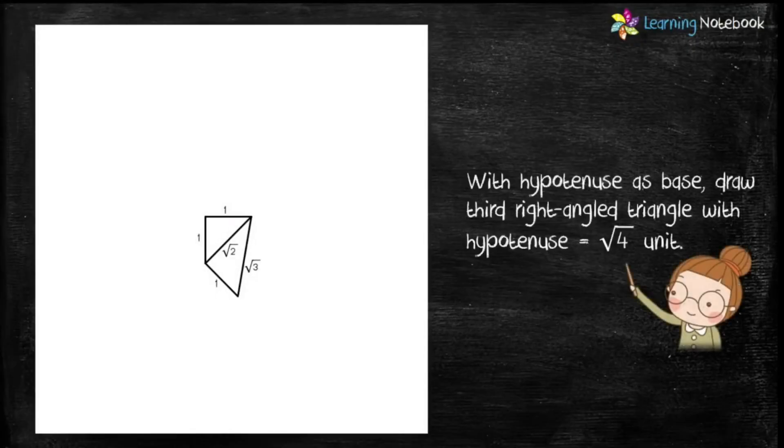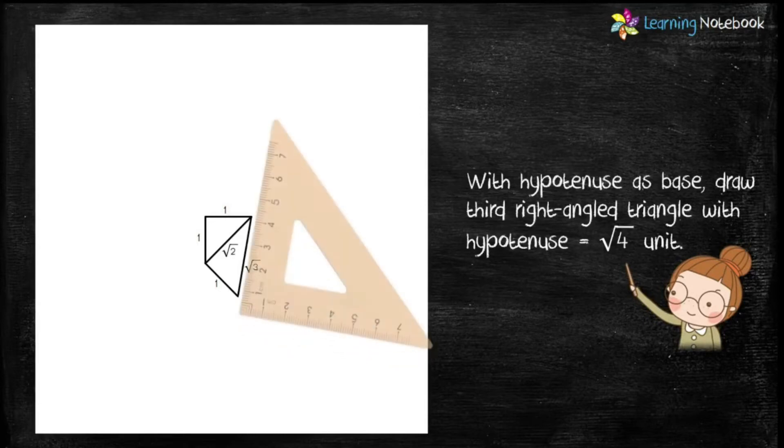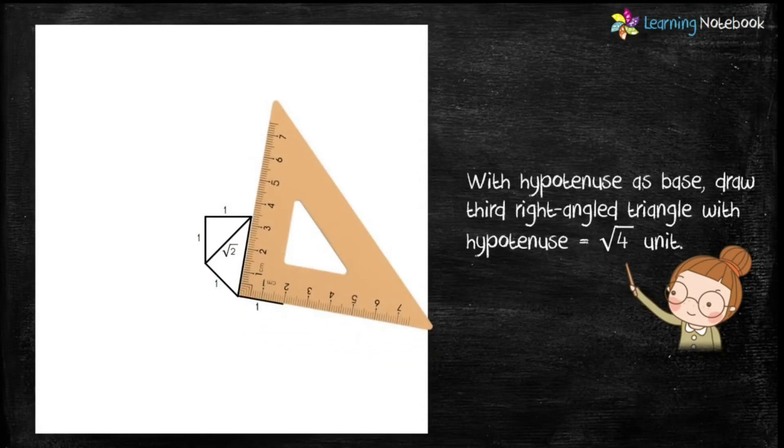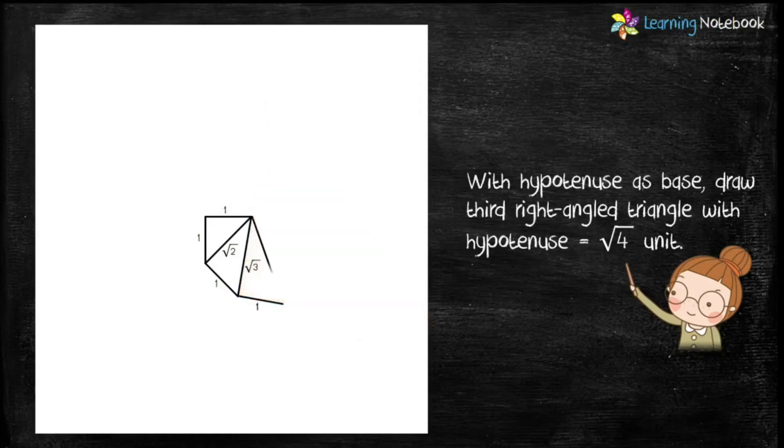Now again, with the set square and this time with hypotenuse root 3 as base, draw the third right-angled triangle with hypotenuse equals to root 4 units.